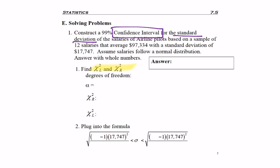So first we need to find our critical values. We start with degrees of freedom, n minus 1, to get 11.